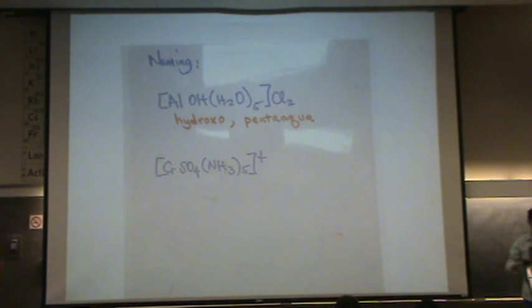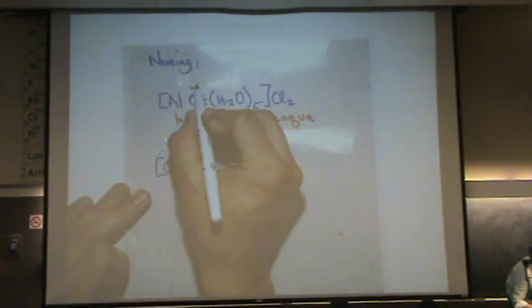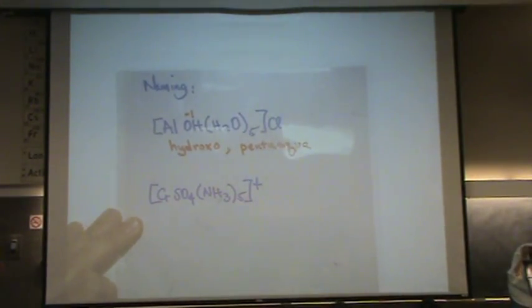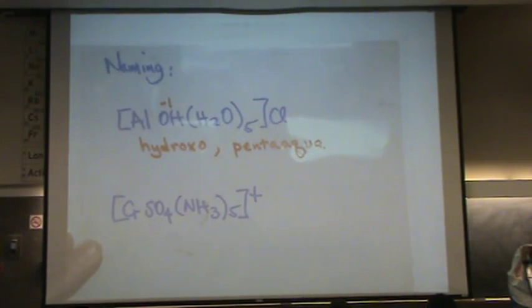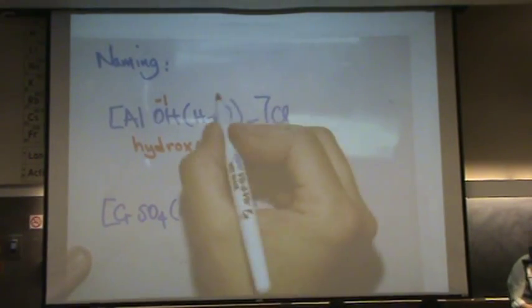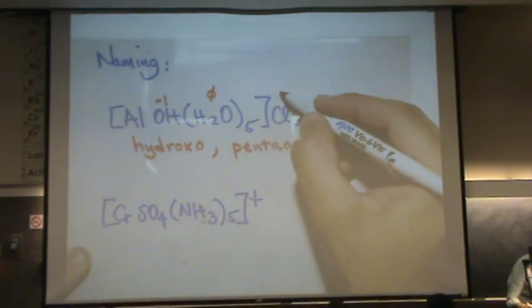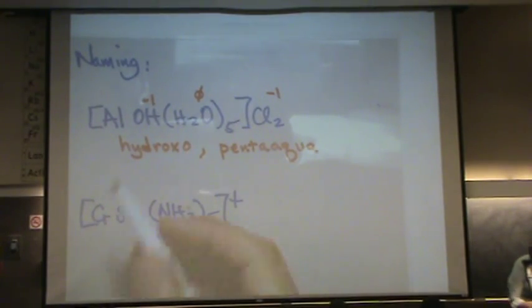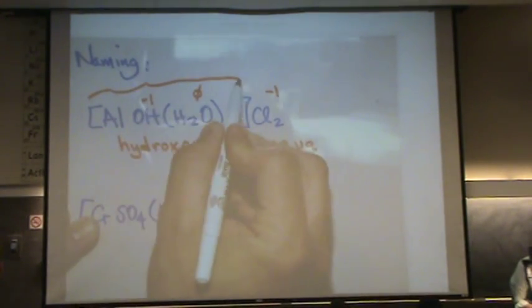And then we have the aluminum. So there's all the ligands, we'll move to the charge of the metal. So hydroxyl is minus one. Zoom in a little bit. The water is zero. The chlorine is minus one. So if the chlorine, and there's two of them, are minus one,